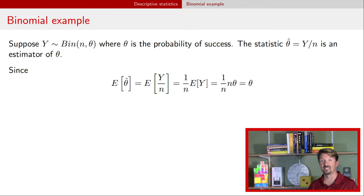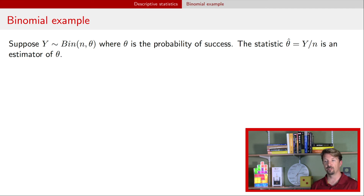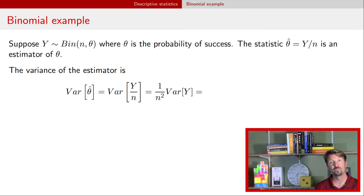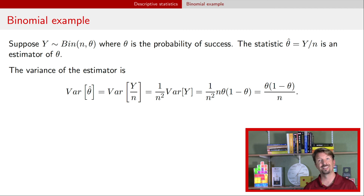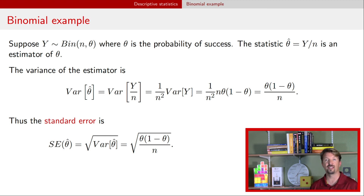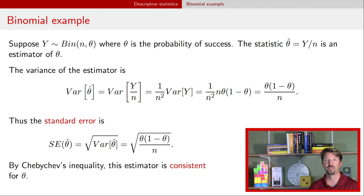The next step is to think about whether the estimator is consistent. For that we need the variance of the estimator. We calculate the variance of theta-hat by plugging in the definition y/n. Pulling out the 1/n outside of a variance requires squaring it, giving 1/n² times the variance of y. The variance of y for a binomial is n·theta·(1 - theta). One of the n's cancels, and we end up with theta·(1 - theta) divided by n. We can calculate the standard error by taking the square root: the square root of theta·(1 - theta) over n. Because the estimator is unbiased and because the standard error decreases with n, we have that it's consistent via Chebyshev's inequality, as we did with the sample mean.